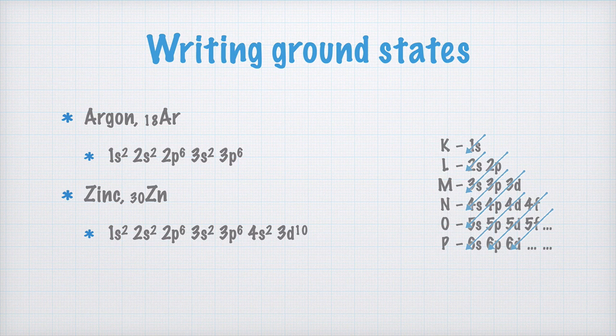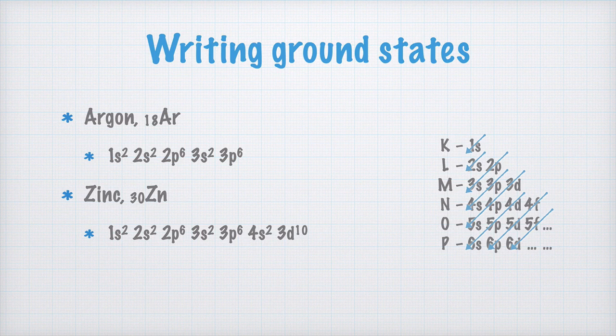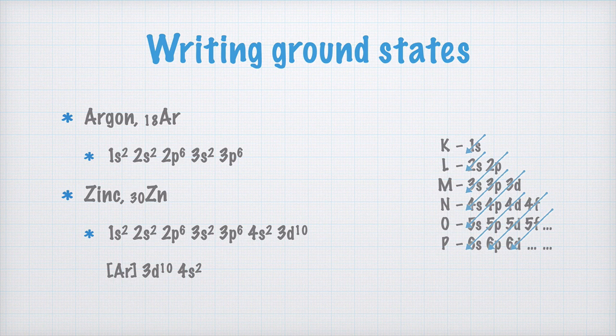Can you now also see that this part of the electron configuration is identical to Argon? Because of this, the electron configuration of Zinc may also be written like this. Finally, don't forget that you can read more and check your learning on my homepage. You'll find a link in the description.